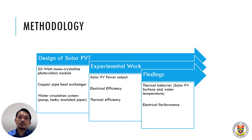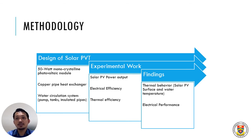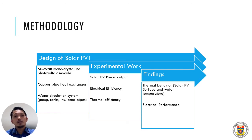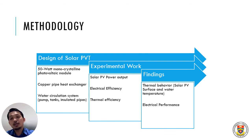The experimental work targets calculating the solar PV power output, from which we can find out the electrical efficiency. At the same time, we will also measure the efficiency of the thermal exchange. Once the experimental work is completed, we'll go to the findings. We are very interested in looking into the thermal behavior of the solar PV — how the surface temperature behaves and what the temperature of the water in the tank is. We'll also see the electrical performance of the solar PV.